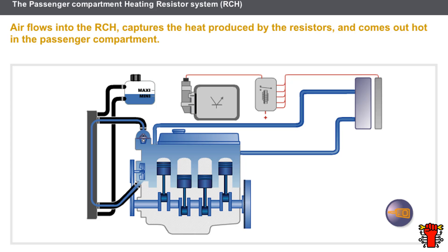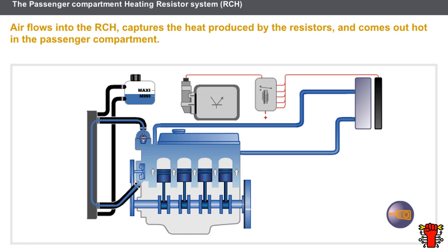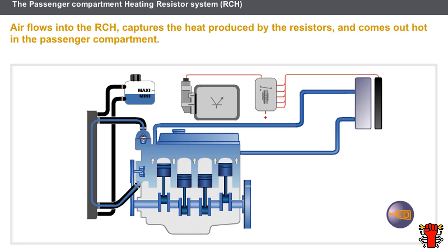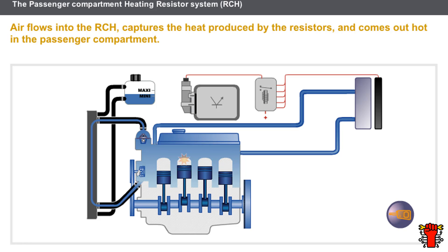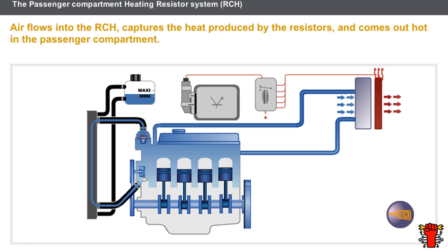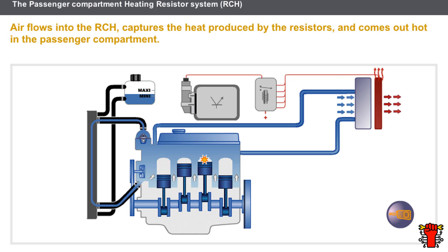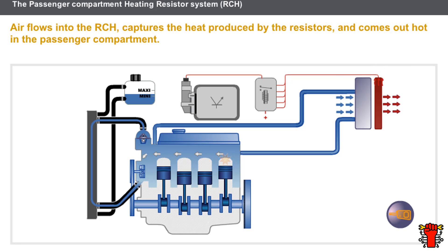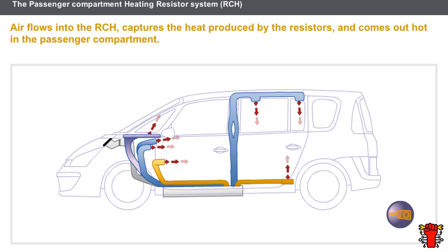Let us now look at the overall operation of the RCH. The air conditioning computer and the UCH, or just the UCH, control the battery voltage supply to the RCH via relays. The RCH transforms the electrical energy into calorific energy. When it flows into the RCH, the air circulated by the fan receives the heat produced by the ceramic plates and diffused by the fins. The hot air is then distributed in the passenger compartment as requested.